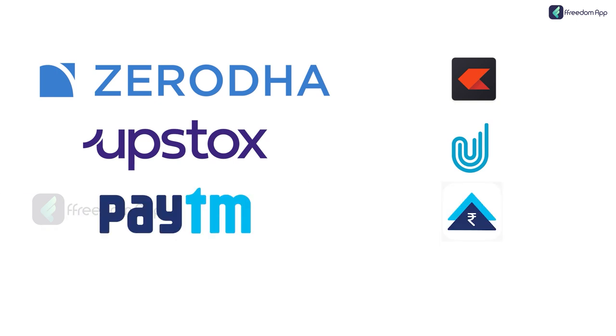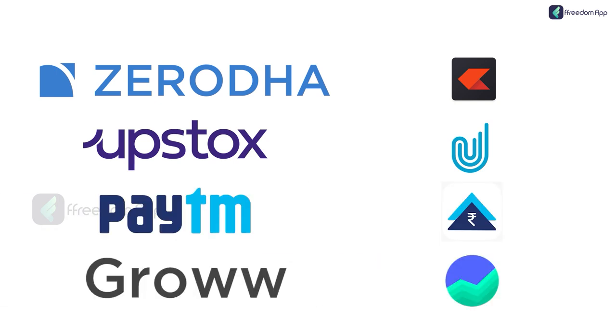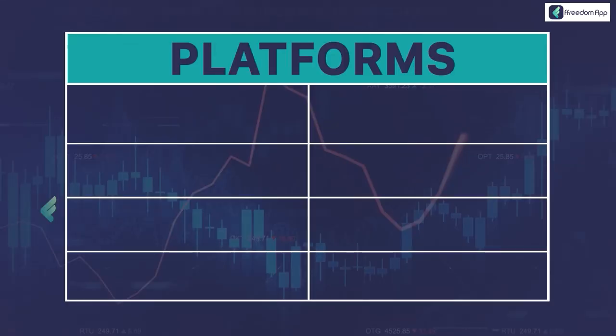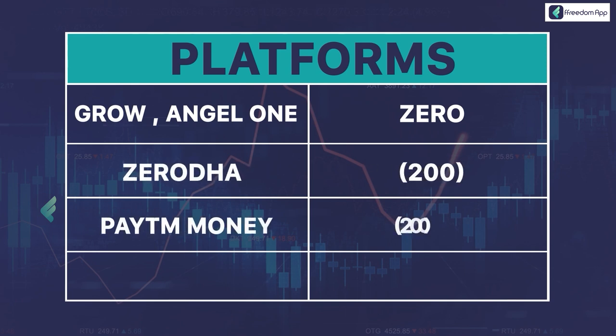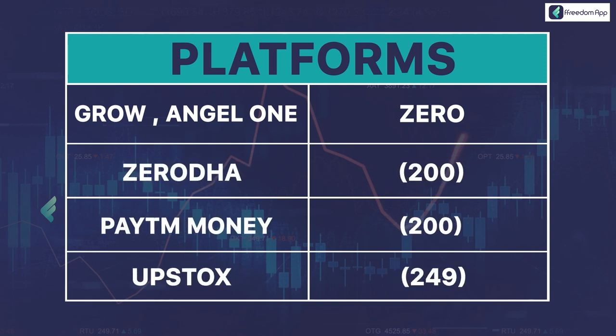The platforms include Zerodha, Grow, Upstox, and Paytm Money. Their opening charges differ — some platforms charge zero and some charge a certain amount. For example: Grow and Angel One charge 0, Zerodha charges ₹200, Paytm Money charges ₹200, and Upstox charges ₹249. So if you use Grow or Angel One, you can open a DMAT and trading account with zero charges.